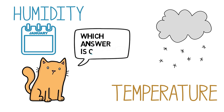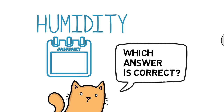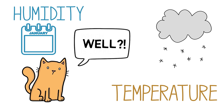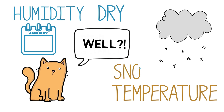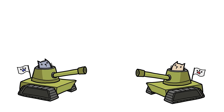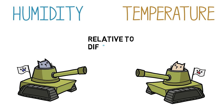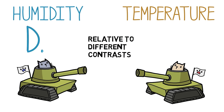Which answer is correct? The first answer was that it's raining because of the humidity. The second answer was that it's raining because of the temperature. The whole dispute seems pointless. The facts are obvious: it's raining instead of staying dry because of the humidity, and it's raining as opposed to snowing because of the temperature. We can avoid the pointless dispute by recognizing that humidity and temperature both cause rain, but they cause rain relative to different contrasts — dry or snow.